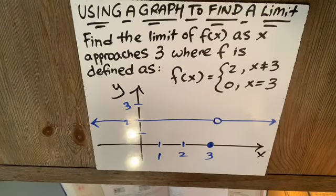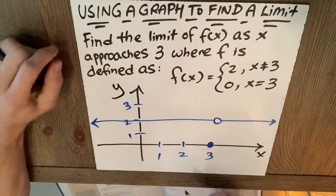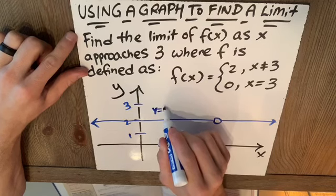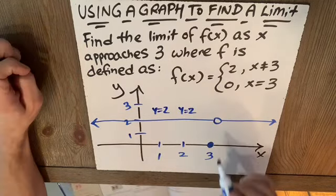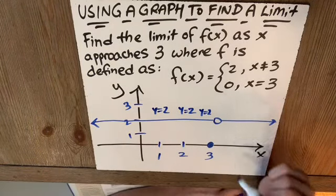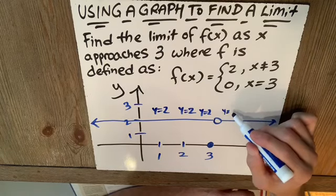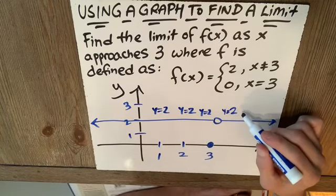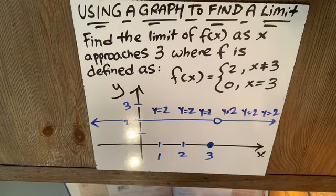Now, let's look at the trend in y. We can make a little chart here. When x is one, y is two. When x is two, y is two. When x is 2.5, y is two. When x is 2.9, y is two. When x is 3.01, y is two. When x is 3.5, y is two. When x is 4, y is two.